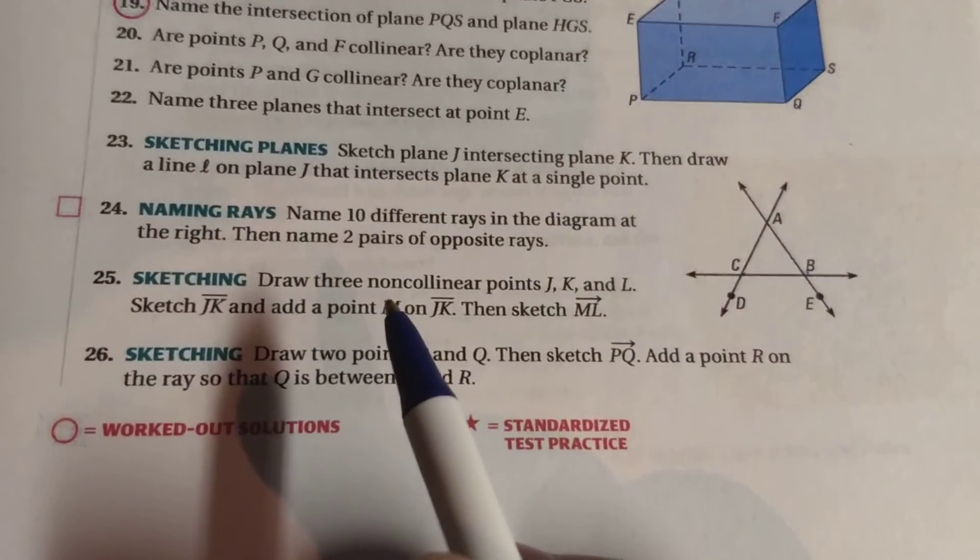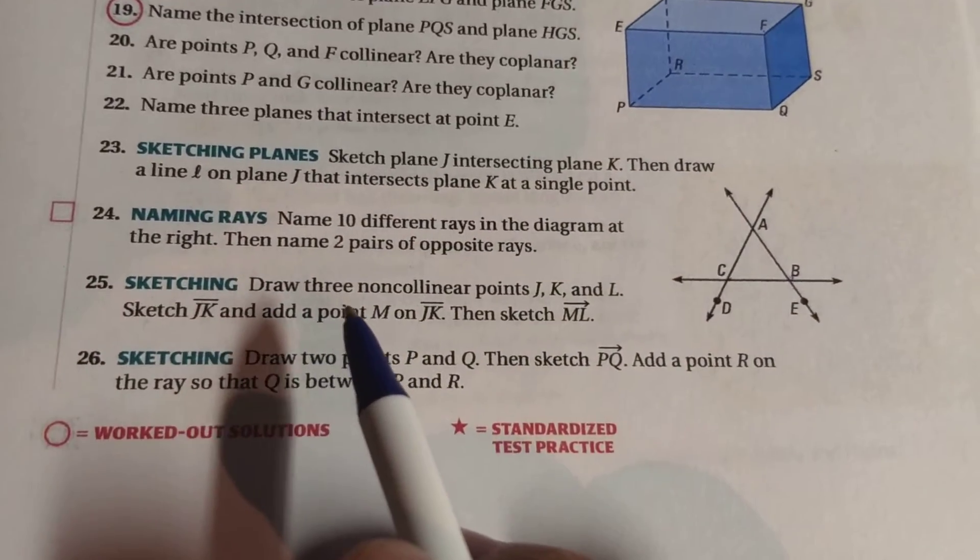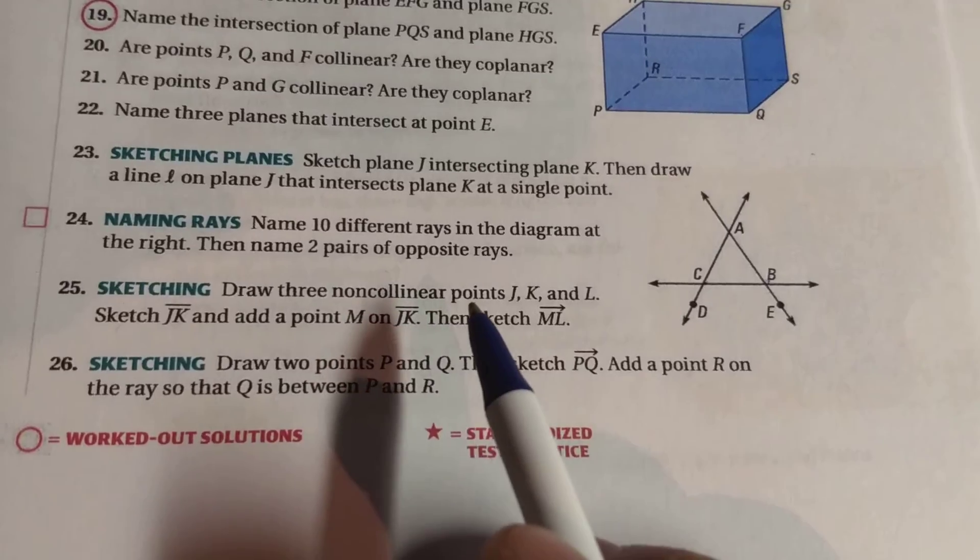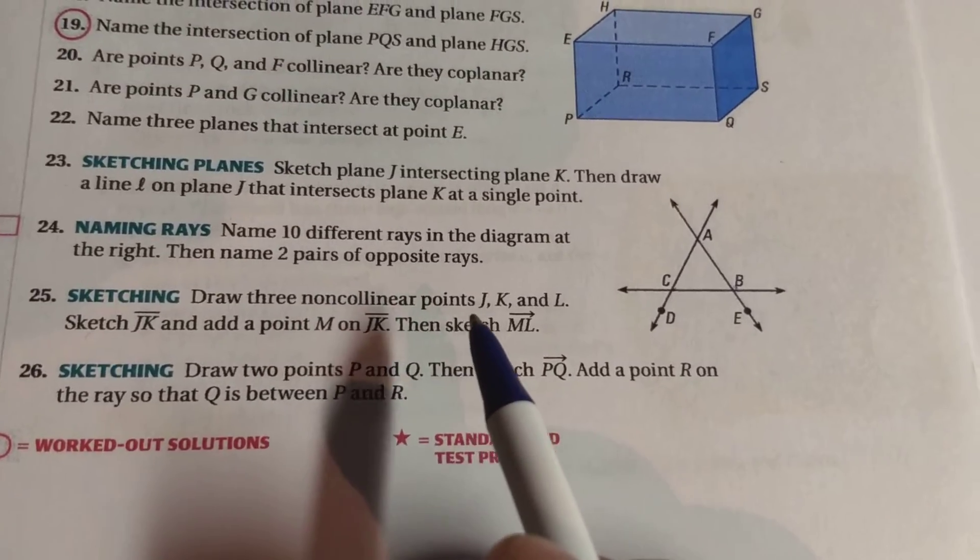Here it asks us to sketch a couple different things. The first thing is we're going to draw three non-collinear points. Non-collinear means they're not all three on the same line.